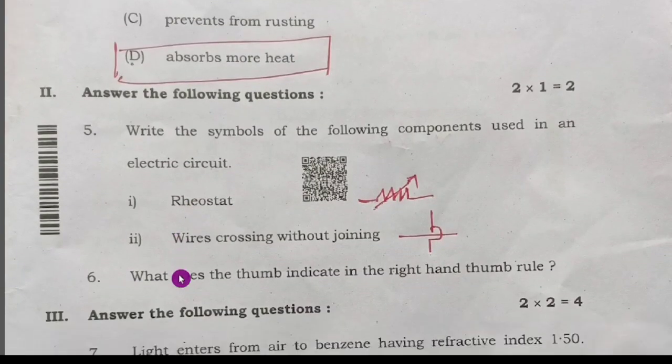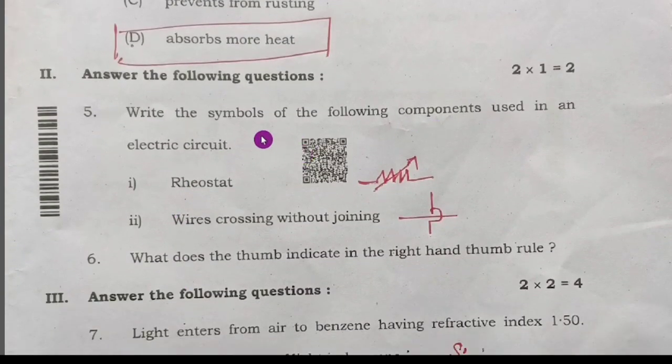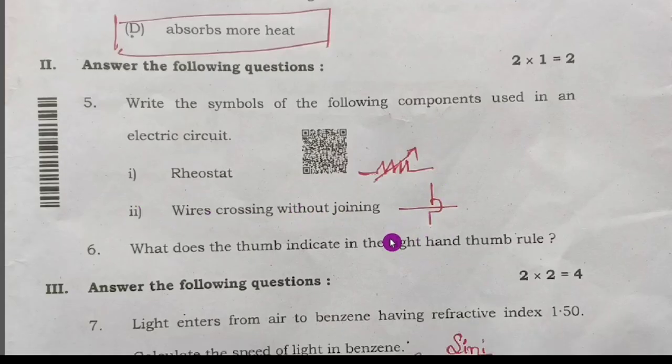Next, one mark question. Fifth question: write the symbol of the following components used in an electric circuit. First one is rheostat, this is the symbol of the rheostat. Second one is wire crossing without joining, this is the symbol. You have to draw.